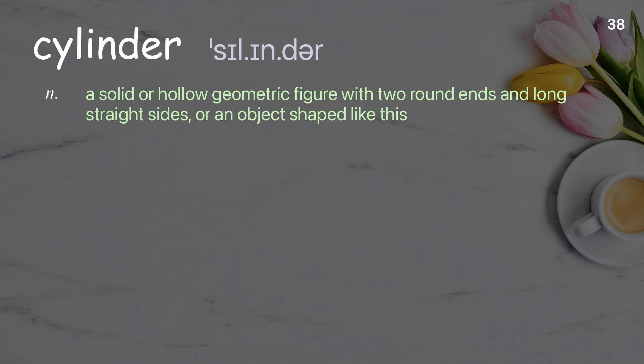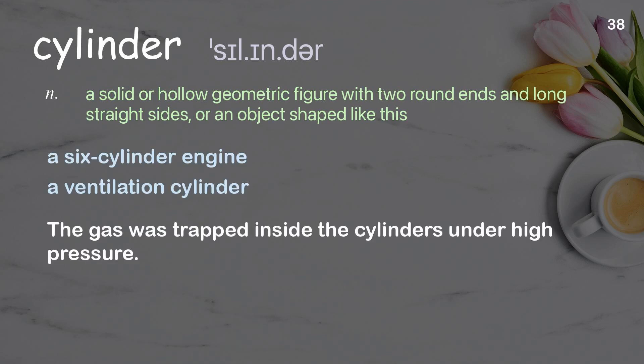Cylinder: A solid or hollow geometric figure with two round ends and long straight sides, or an object shaped like this. Examples: A six-cylinder engine. A ventilation cylinder. The gas was trapped inside the cylinders under high pressure.